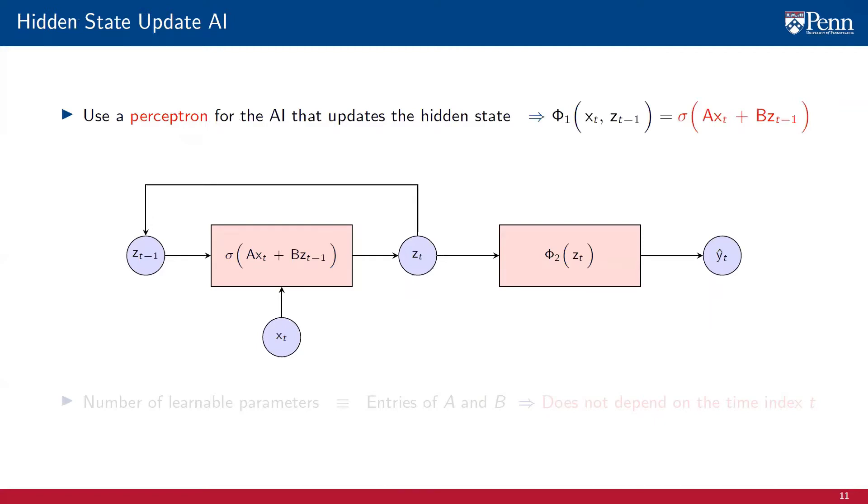The state xt is multiplied by a matrix A. The state zt-1 is multiplied by a matrix B. The results are added up and the sum is passed through a pointwise nonlinearity. The learnable parameters of an RNN are the entries of the matrices representing the linear combination of the data points A and of the hidden state B.